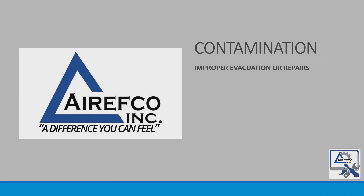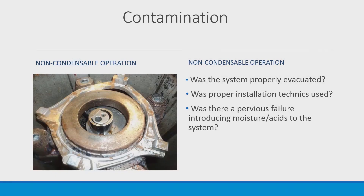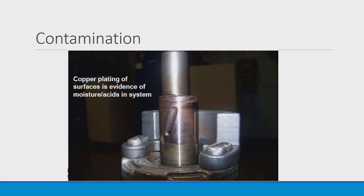System contamination caused either by improper evacuation or improper repairs — this is a picture of a scroll compressor that has been subjected to non-condensibles and contamination. Was the system properly evacuated? Were proper installation techniques used? Was there a previous failure introducing moisture and acids into the system? Copper plating is evidence of moisture and acids, and this copper buildup usually builds up in bearings, displacing the oil and causing compressor failure.